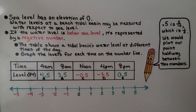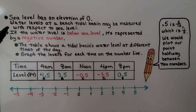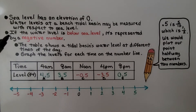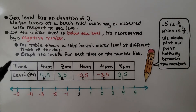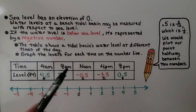Sea level has an elevation of zero. Water levels at a beach tidal basin may be measured with respect to sea level. If the water level is below sea level, it's represented by a negative number. The table shows a tidal basin's water level at different times of the day.